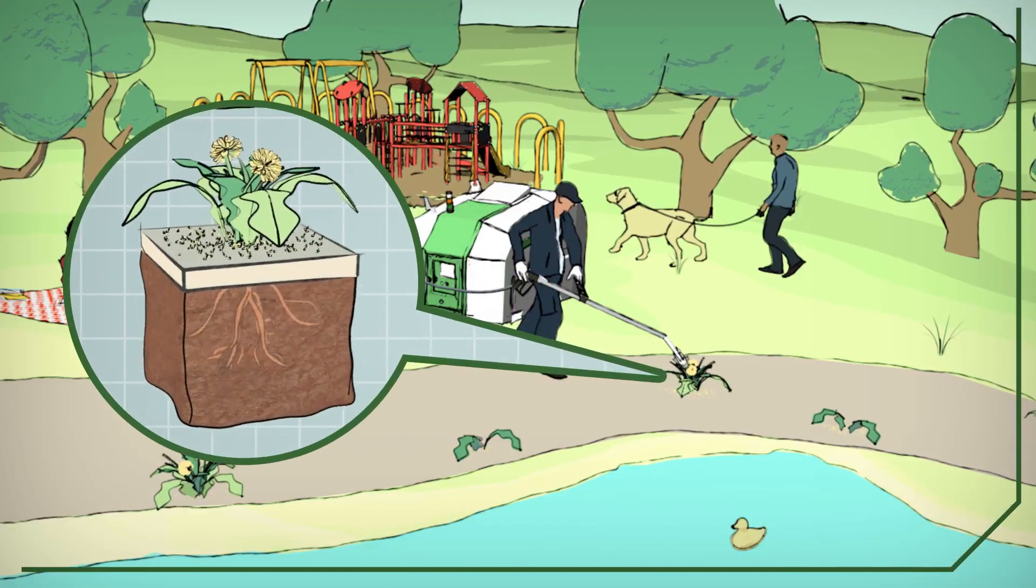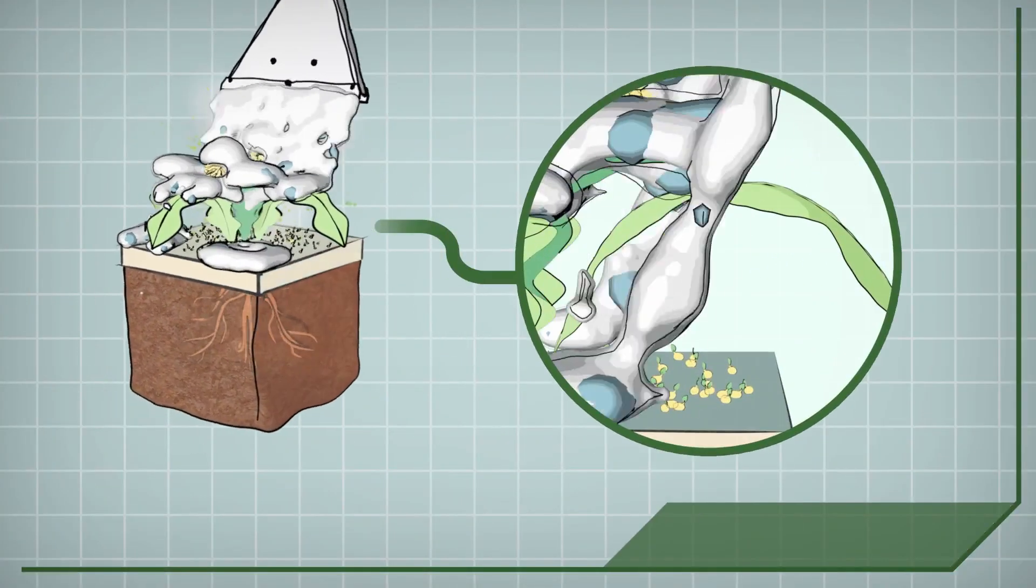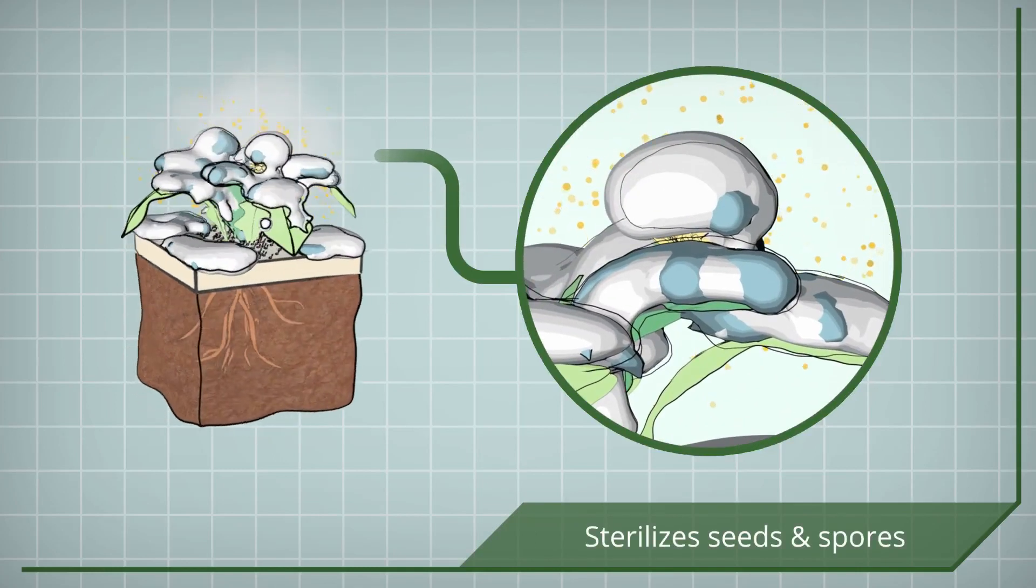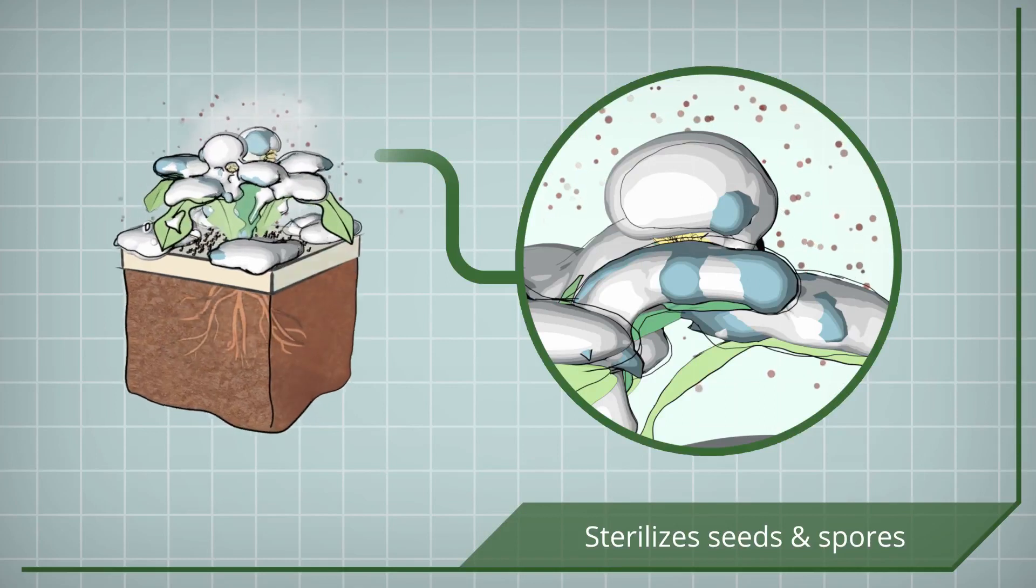The Foamstream mix flows from the lance, covering the vegetation. Surrounding seeds and spores are sterilized, leading to a net reduction in weed coverage over time.